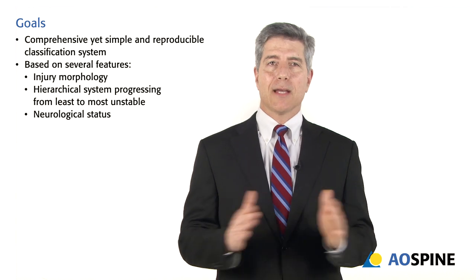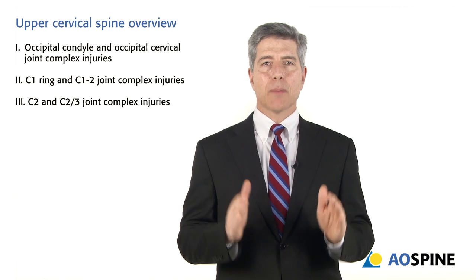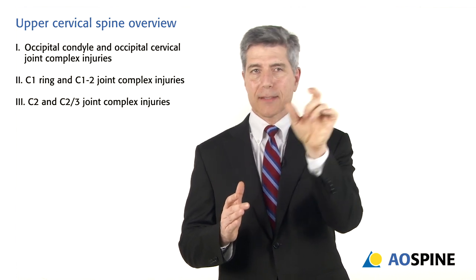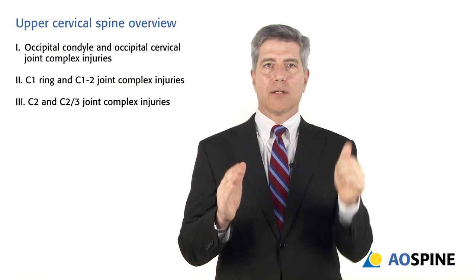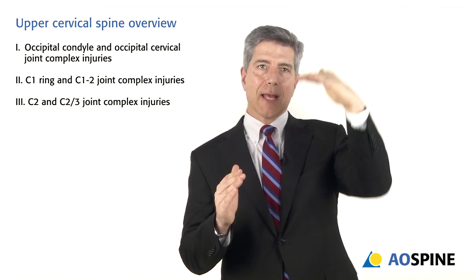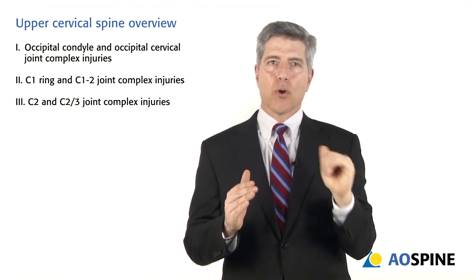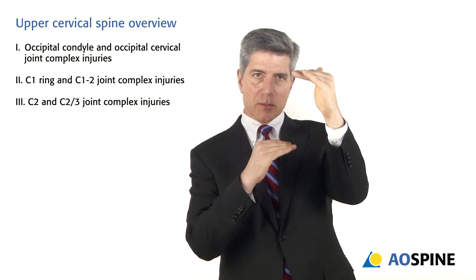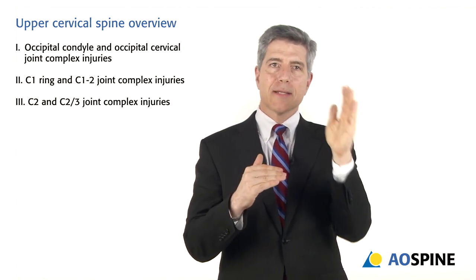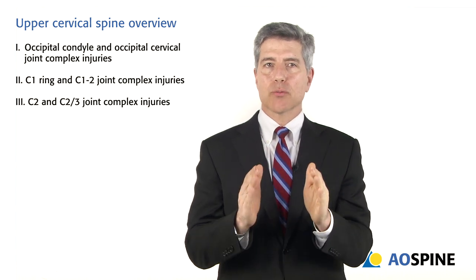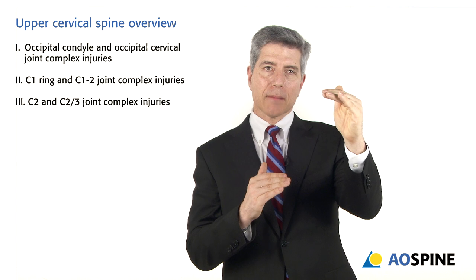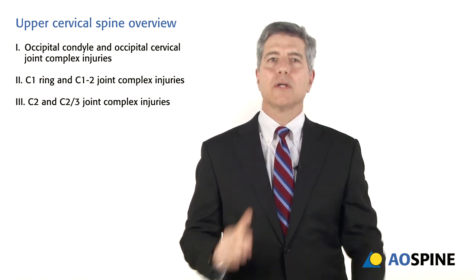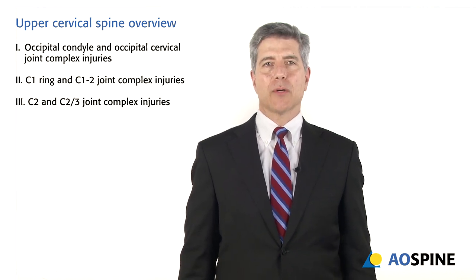In the upper cervical spine, instead of having different classifications for the condyle, occipital cervical, and C1 ring, we only have three categories. Each one addresses the bone above and the joint below. Category one: occipital condyle and occipital cervical injuries at the occiput-C1 junction. Category two: C1 ring and C1-2 joint injuries. Category three: C2 vertebral body and C2-3 joint complex injuries.